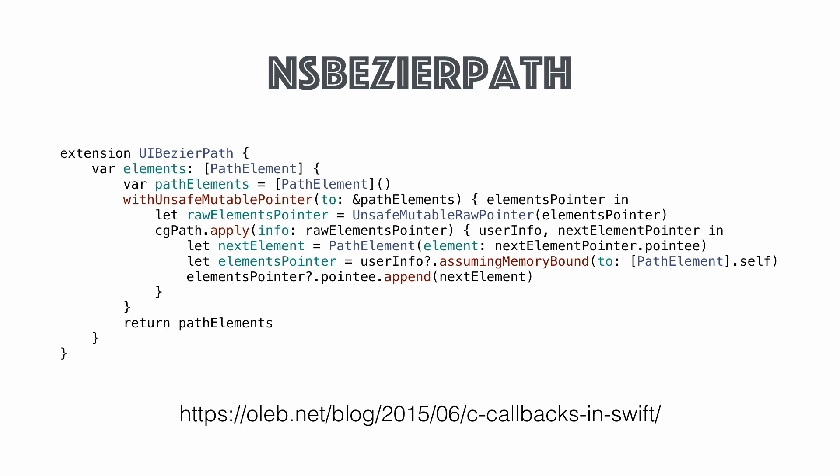For that there's a nice little extension. I'm not going to take credit for this — it's a blog post by Ole Begemann and the topic was actually C callbacks in Swift, but he used UIBézierPath as an example. This code uses unsafe mutable raw pointers, which always makes me nervous — I've tried it and it works great, but I'm not going to explain it. Go to the blog post and he will go into great detail.